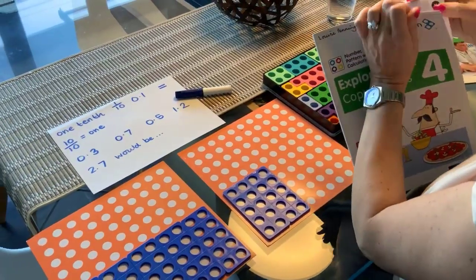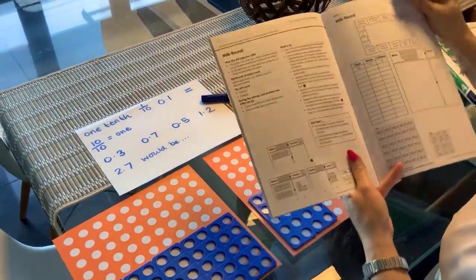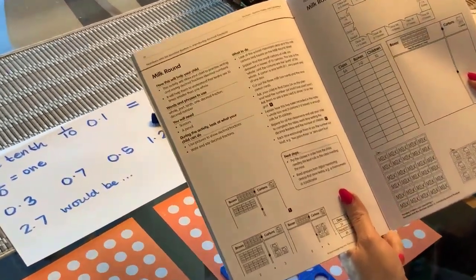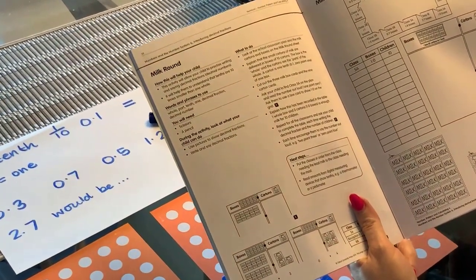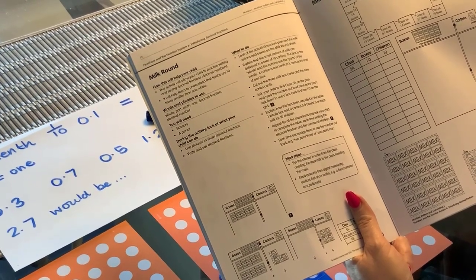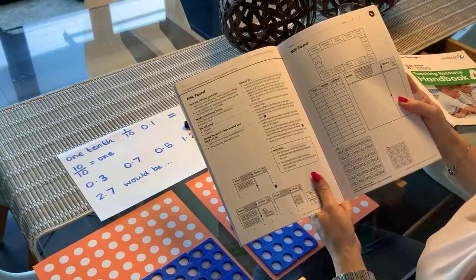And then here is the Explore More copy master that goes with it. It's a really nice activity called Milk Round, where children are thinking about practicing and saying decimal fractions, and then thinking about wholes, tenths, decimal fractions, decimal numbers.